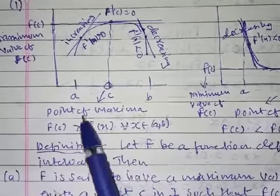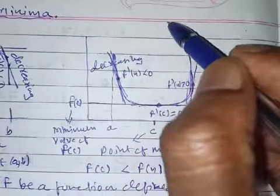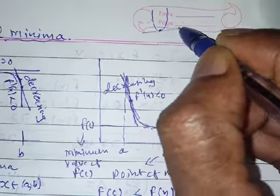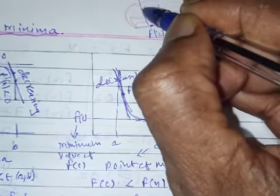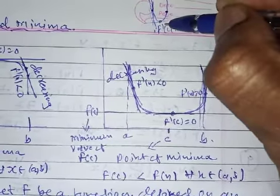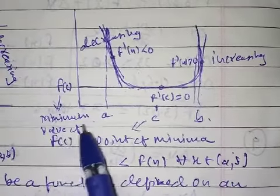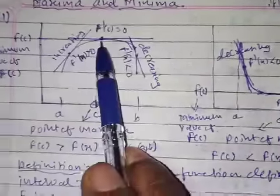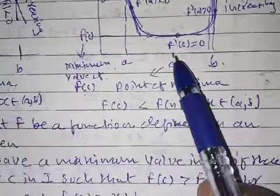Draw the curve now. Here it is parallel to the x-axis, so f'(c) equals 0. Looking at the tangent, the function is decreasing before c and increasing after c. So f(c) is the minimum value. Here it was a maximum value of f(c), and here it is a minimum value of f(c).